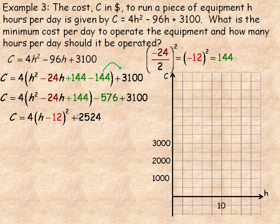So this is now in the vertex form. We can see that the vertex would be (12, 2524). This is the number of hours per day, and this is the y-coordinate of that vertex. So if we plot the point, 12, 2524 would be about right there. Notice each block here is 2 hours on the h-axis.